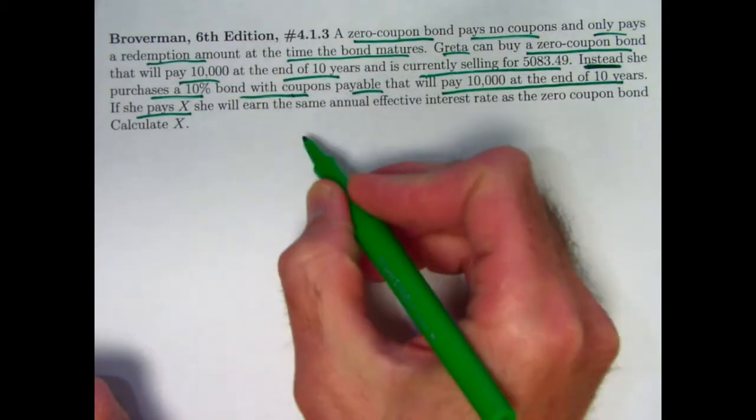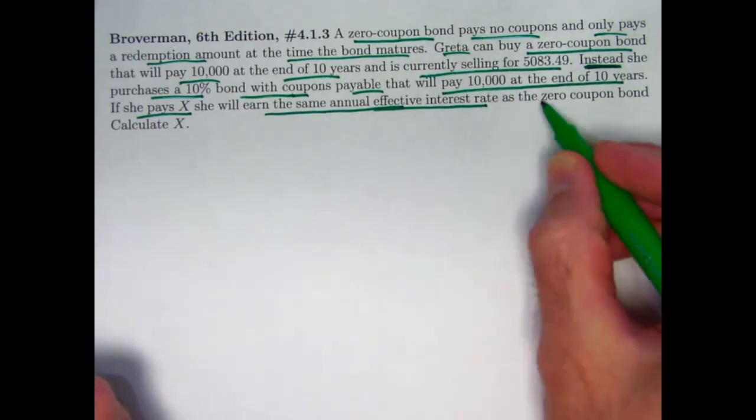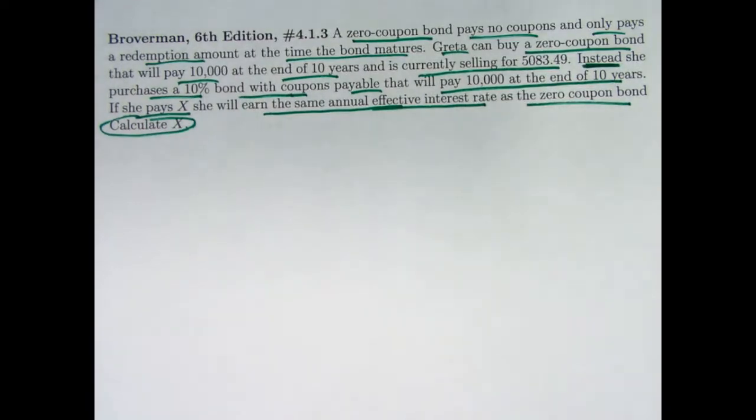If she pays X for the second bond, she's going to earn the same annual effective interest rate as the zero-coupon bond. Calculate X. Alright, let's start by figuring out what that same effective annual interest rate is.